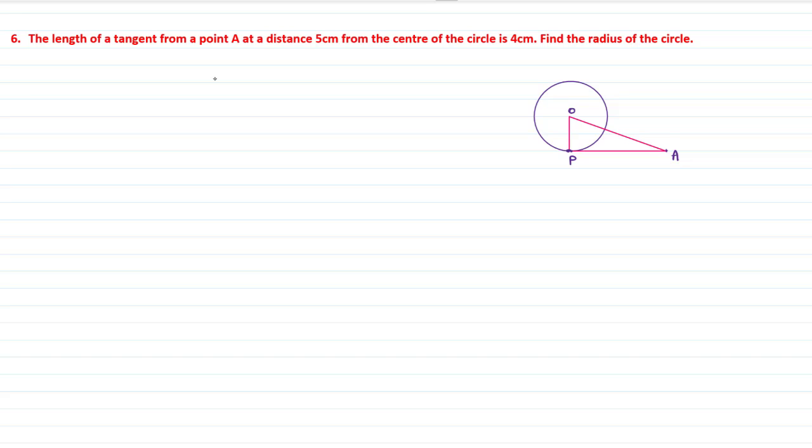The length of a tangent from a point A at a distance. OA is the distance here. This is of 5 cm from the center of the circle. The length of the tangent AP is equal to 4 cm.